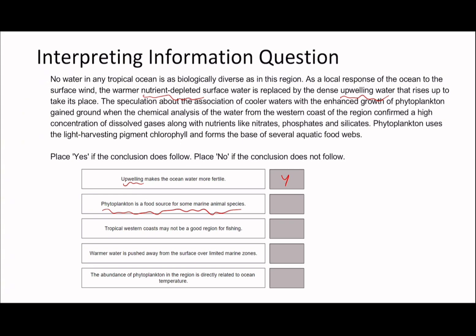Second statement: 'Phytoplankton is a food source for some marine animal species.' Proper nouns can't really be changed, so phytoplankton is a good keyword — combined with something about food source and animals. The text says: 'The speculation about the association of cooler waters with the enhanced growth of phytoplankton gained ground when chemical analysis of the water from the west coast confirmed a high concentration of dissolved gases along with nutrients like nitrates, phosphates and silicates. Phytoplankton uses the light-harvesting pigment chlorophyll and forms the base of several aquatic food webs.' I would agree with this one because it forms the base of several aquatic food webs, where one animal eats another.